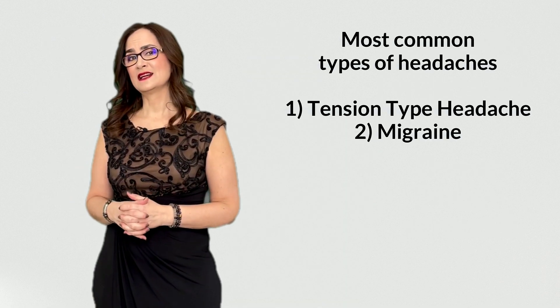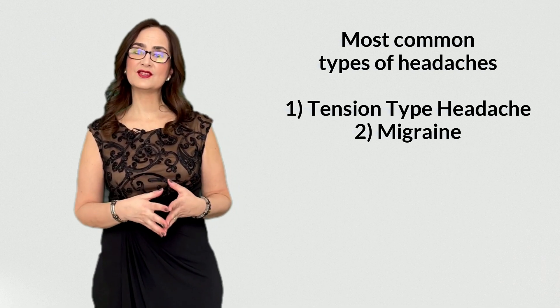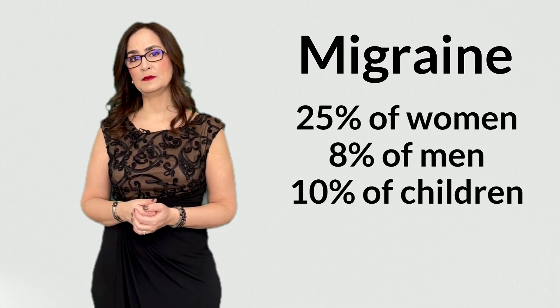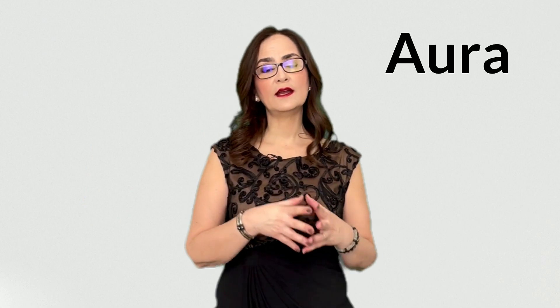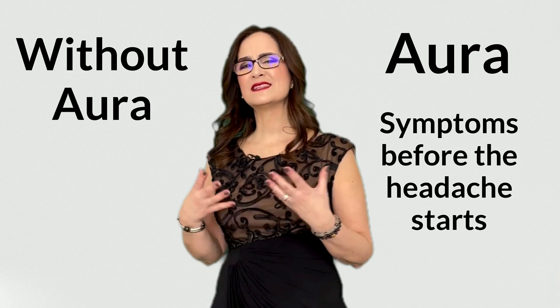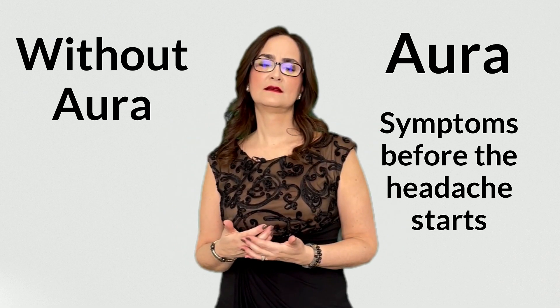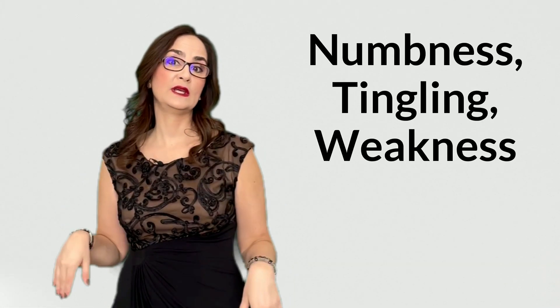Migraine is the second most common type of headache; the first is tension-type headaches. Migraine affects 25% of women, 8% of men, and 10% of children in Canada. There are migraines with aura and without aura. Aura is a symptom that occurs before the headache starts. The most common aura symptoms are visual disturbances such as flashing lights, bright color spots, zigzag lines, and foggy vision, but they can also include numbness, tingling, and in some cases weakness.